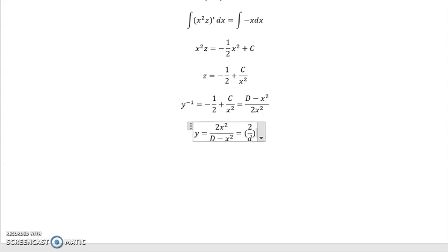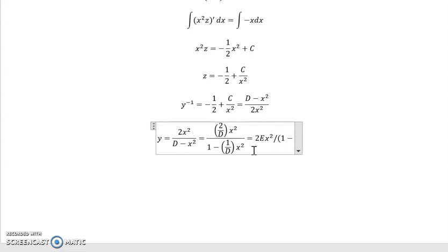But just to finish the thought, let's say I did 2 over D, multiplied everything by 1 over D, 2 over D times x² divided by 1 minus 1 over D times x². And then I simply replace 1 over D with E, and so I would get 2Ex² all over 1 minus Ex², which I believe is the answer that we had in the previous solution.